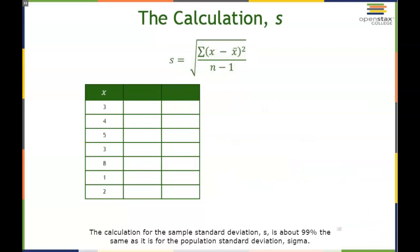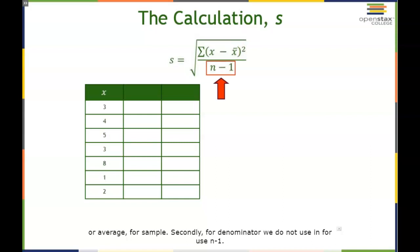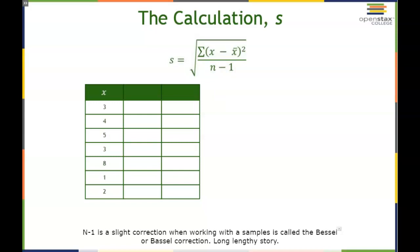The calculation for sample standard deviation S is about 99% the same as for population standard deviation sigma. There are two slight differences: first, instead of mu we use x-bar for our sample average. Second, for the denominator we use N minus 1 instead of N. N minus 1 is a slight correction when working with samples — it's called the Bessel correction. Just use N minus 1 when calculating standard deviation for a sample.